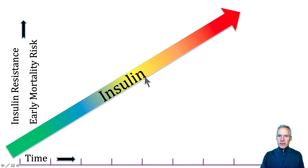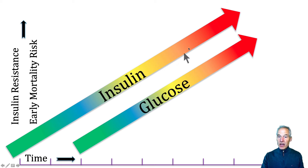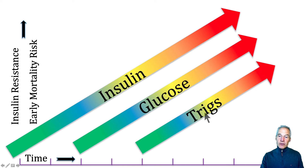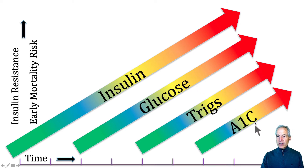As insulin increases, it's increasing to control blood glucose within a tight, narrow range that physiologically isn't harmful. But when we leave that range, damage, inflammation, and disease risk increase. When insulin levels tap out — your pancreas can only produce so much — then glucose levels start increasing. Secondary to that, triglycerides will increase, and finally we'll see an increase in the classic A1C marker, which is simply blood glucose combining with red blood cells. Red blood cells hang around in circulation for about four months, so A1C is actually an average value looking back at glucose over a four-month period.